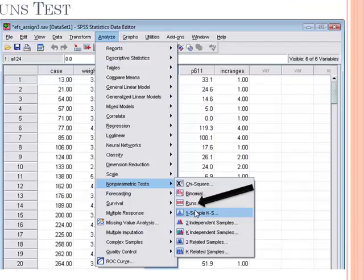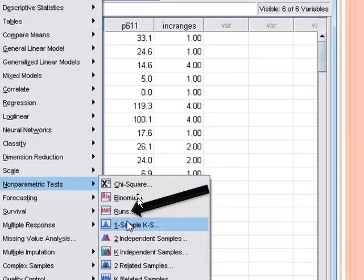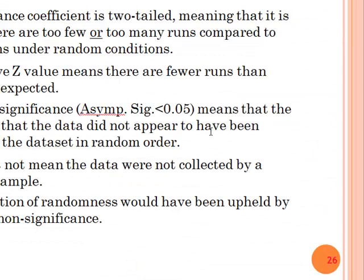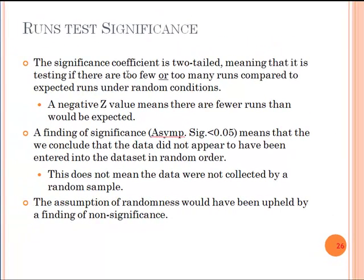You select runs under non-parametric tests, then get the value. The significance coefficient is two-tailed and it is testing that either there are too few or too many runs compared to the expected runs under random conditions. If you get a negative Z value, it implies there are fewer runs than would be expected. If the p-value is less than 0.05, it implies we conclude that data did not appear to be entered randomly. And it doesn't mean the data were not collected from or not a product of random sampling - it just means the data were not entered in a random fashion. Not a very helpful test because I don't see any use immediately.